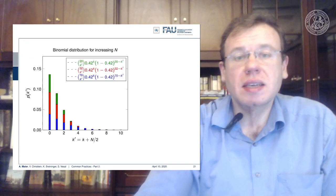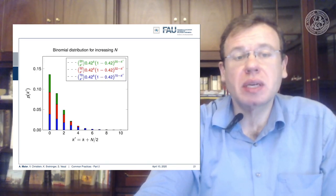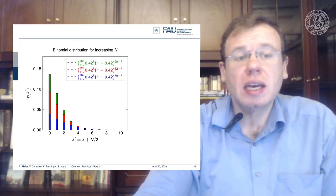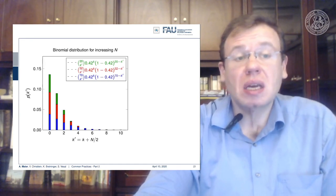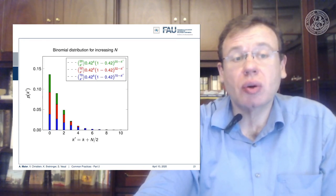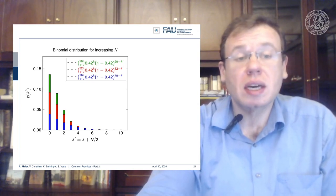We can visualize this in a plot. If we take more weak classifiers and set their probability of being wrong to 0.42, we can compute this binomial distribution. If we choose 20 classifiers, we get a probability of approximately 14% that the majority is wrong. If we choose 32, we get less than 10% probability that the majority is wrong. And if we choose 70, in more than 95% of cases the majority will be correct.